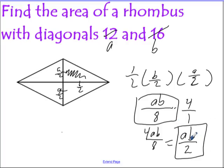And all that is, if you notice, is just the two diagonals multiplied together divided in half. It's just that easy.